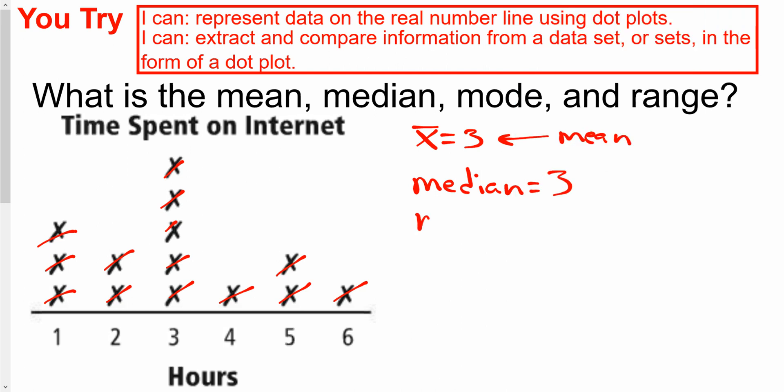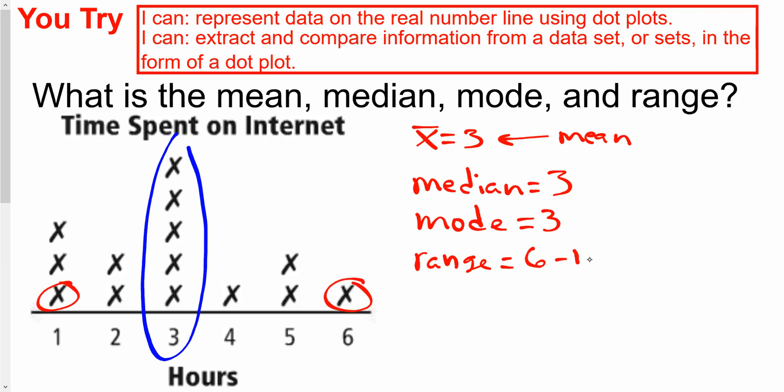The mode. Would you have a look at that? The mode is the one that appears the most in our data. Really easy to see in the dot plots. The tallest one there. So our mode is 3 also. The range is found by taking the max minus the min. The max is 6, the min is 1. So 6 minus 1 is 5. The range is 5. Guys, that's how it's done.